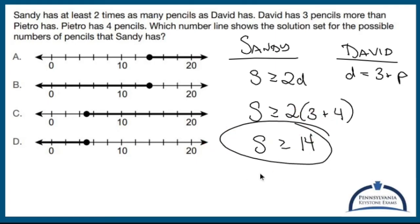So I need the one that's greater than or equal to 14, which is you. Yeah. I like it. These two don't make sense. And here's why. None of these make sense. And here's why. You are basically saying Sandy has negative pencils. Not possible.